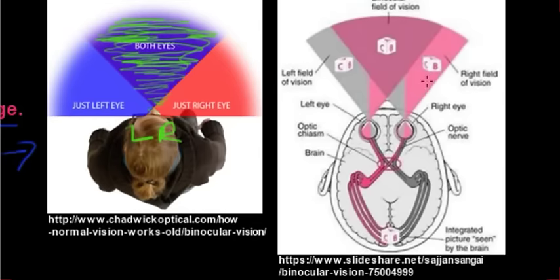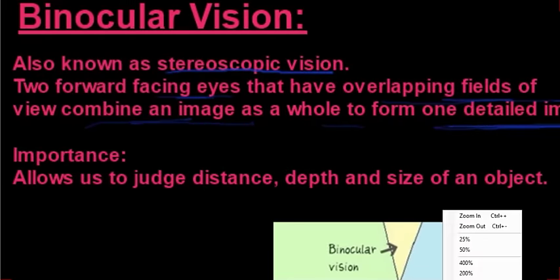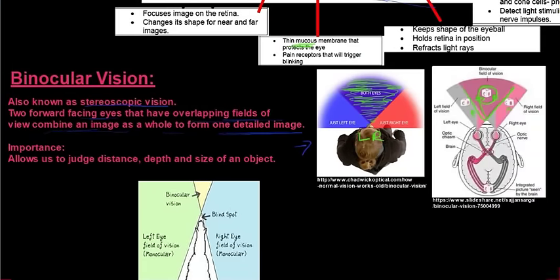Looking more closely at the diagram, the right eye sees a block from a slightly different perspective than the left eye. Where these two images meet in the middle, you get one very detailed composite image from both eyes. The importance of binocular vision is that it allows us to judge distance, depth of field, and the size of an object — enabling you to catch a ball or judge distance. That's why all predators have two forward-facing eyes.